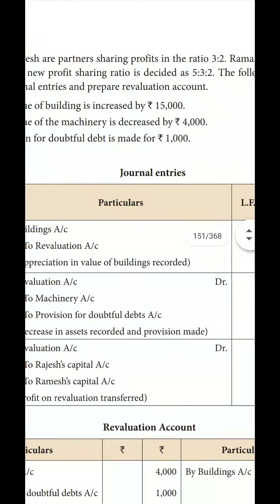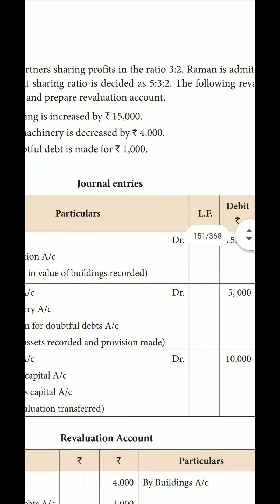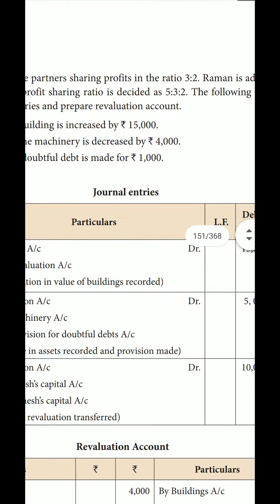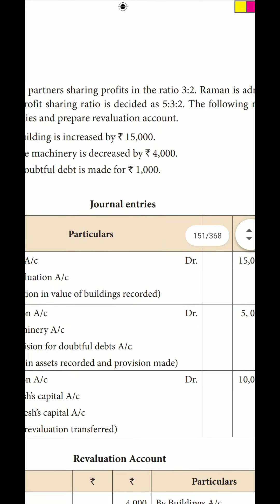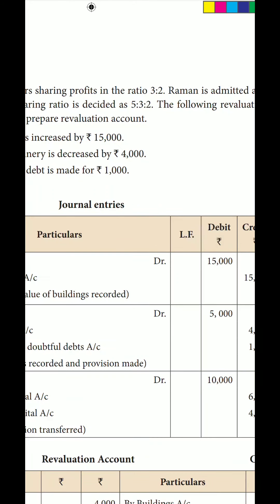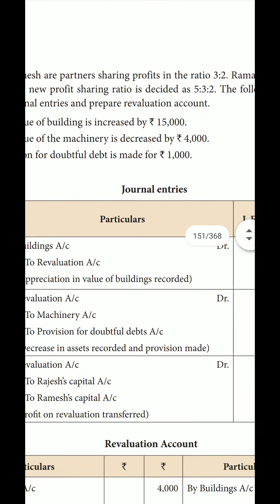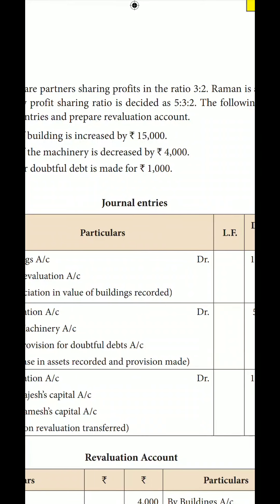Profit is 15,000 and loss is 5,000, so the net profit is 10,000. This net profit belongs to the old partners. The Revaluation Account debit to old partners' capital — Rogers capital and Ramesh capital — distributing the net profit of 10,000 in the old ratio of 3 is to 2.